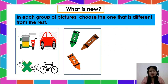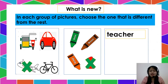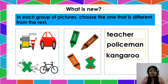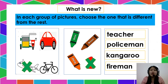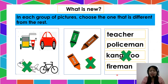Next: green, brown, orange, and one. What does not belong to this group? Great! That is number one. Next: teacher, policeman, kangaroo, and fireman. Can you tell me which is different here? It is because kangaroo is an animal while the others are people or persons.